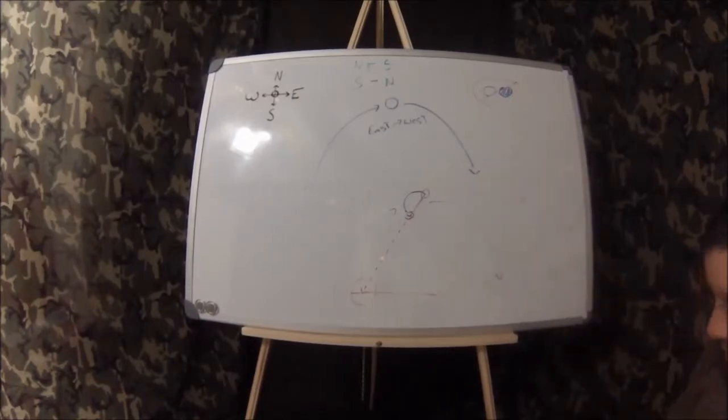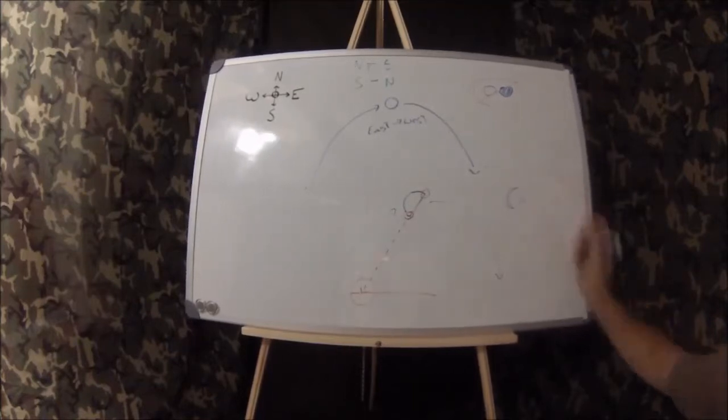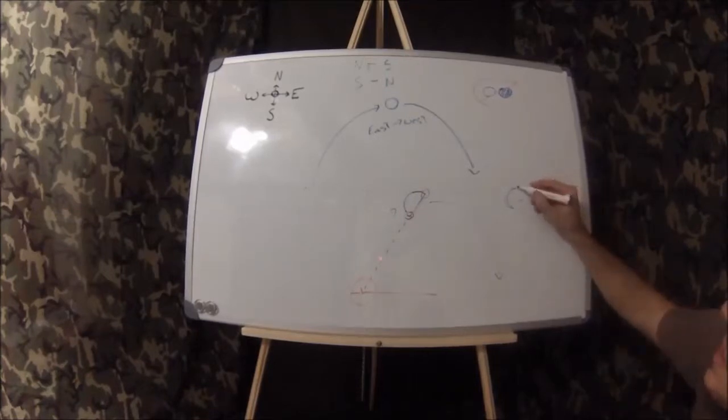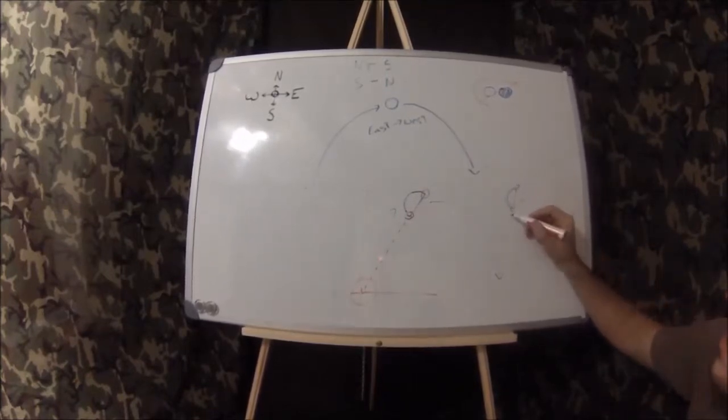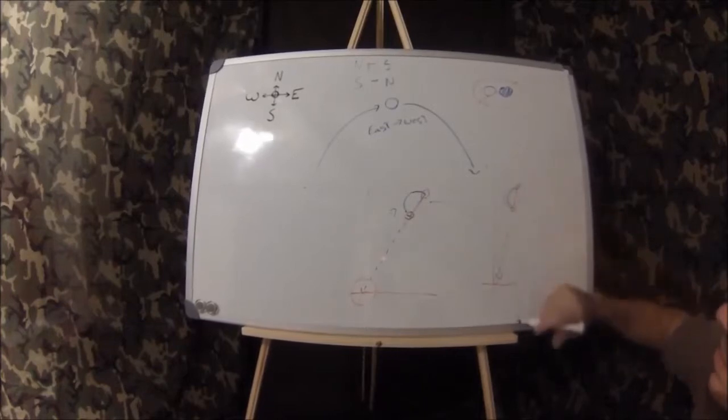This works with any kind of moon except the full or new. So I'll just draw a few more examples. Here we have a crescent moon like this. Now what's going to happen here is you're going to take the tip here, tip here, and you're going to create this line and then follow it all the way down to the horizon. That's your point for either south or north depending on which hemisphere you're in.